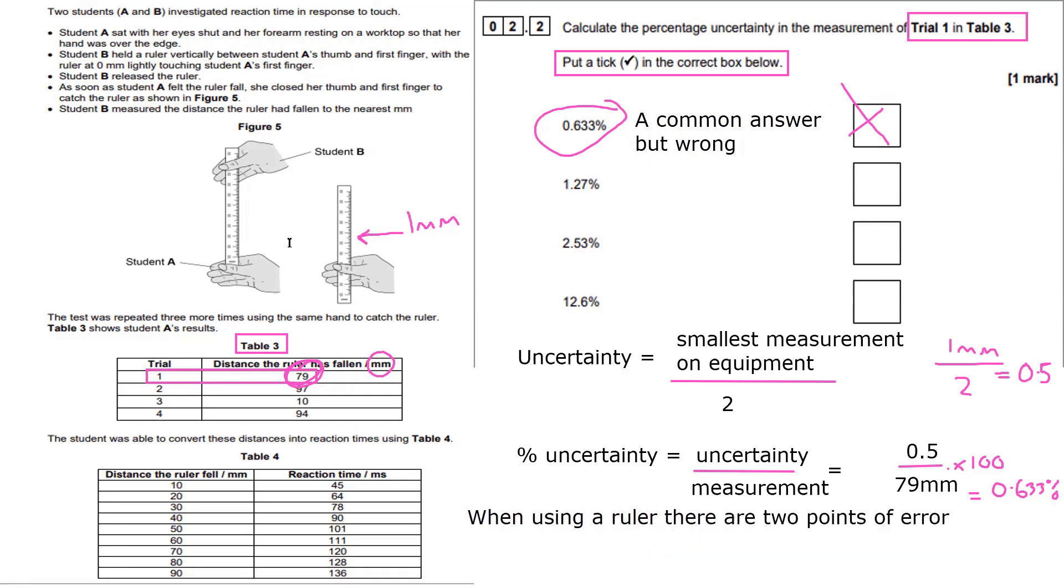You've got the point at 79 millimeters, and then you've got the 0 millimeters. So there's actually two areas where we can get uncertainty. So we'll have uncertainty at 0 and uncertainty at 79. Therefore, we have to double the amount of uncertainty when using a ruler.